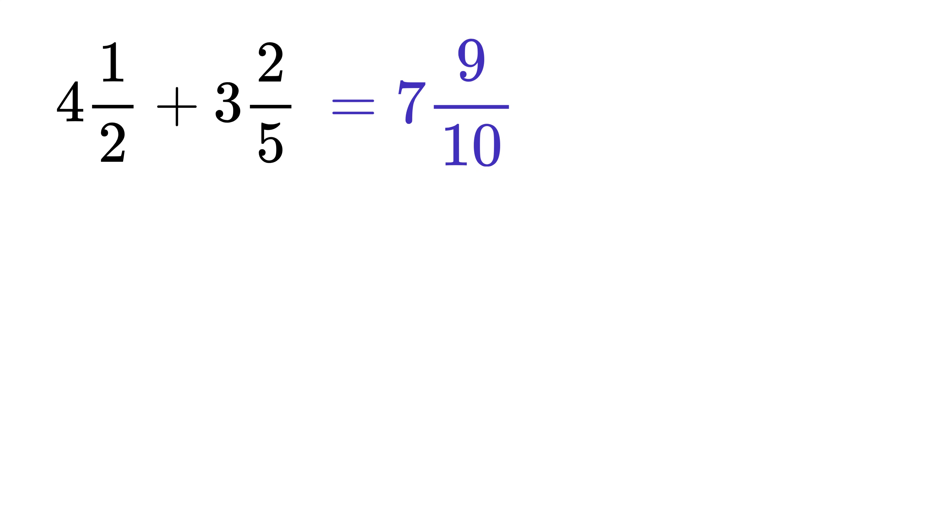So the answer is 7 9/10. Next up, we have 7 1/4 plus 1 1/6. 4 times 6 is 24, so put it here. Then cross multiply.